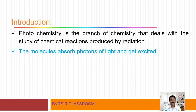Photochemistry is the branch of chemistry that deals with the study of chemical reactions produced by radiation. When a substance absorbs light, chemical reactions occur. That part of study is called photochemistry. The molecules absorb photons of light and get excited.